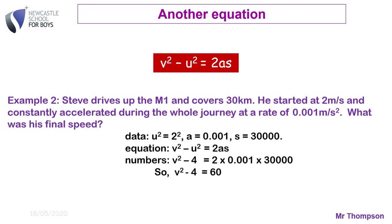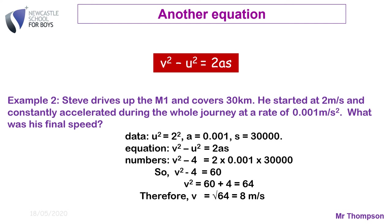So v² − 4 = 60. Adding 4 to each side: v² = 64. Don't forget to take the square root, so v = √64 = 8 m/s.